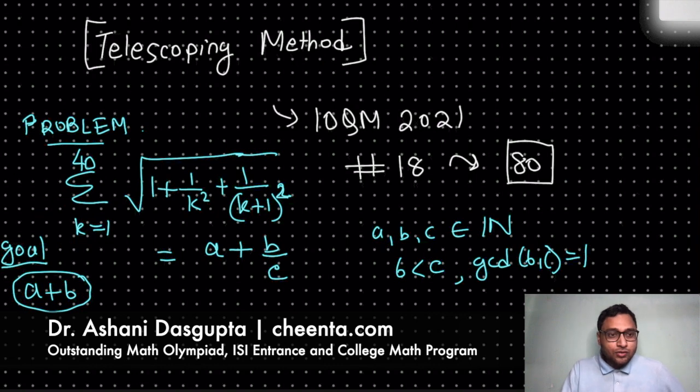And we want to do this summation, this sum of 40 objects. You see, if I'm going from 1 to 40, I have to plug in k equal to 1 here, then add that to k equal to 2 here, then add that to k equal to 3 and so on.